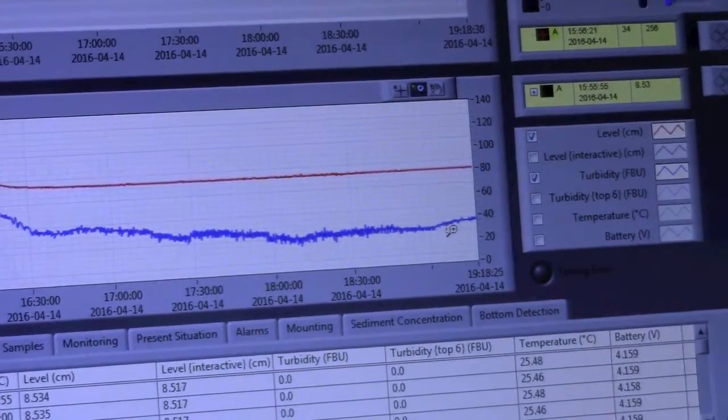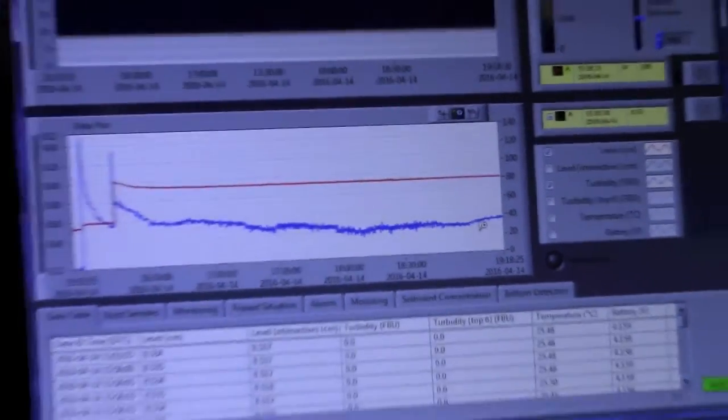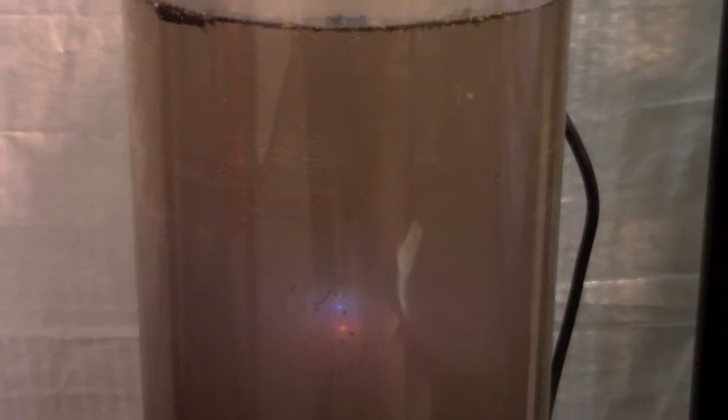FBU being Formasin Backscatter Unit which is the same as Formasin Turbidity Units, FTU, only that by saying FBU we define that it's 180 degree backscatter. And it's also similar to NTU, Nephelometric Turbidity Units, except that one is measured with white light. FTU and FBU is measured with near infrared light.